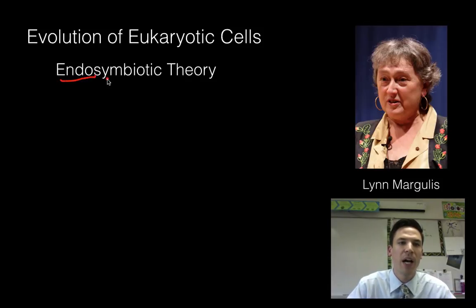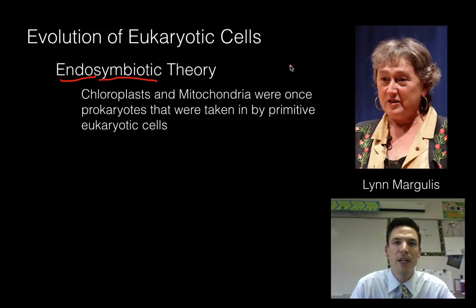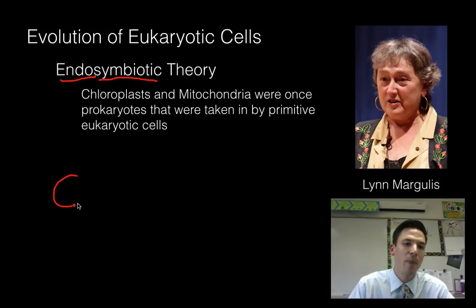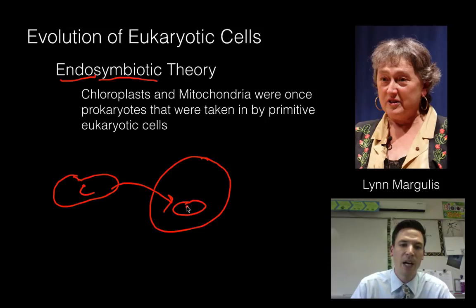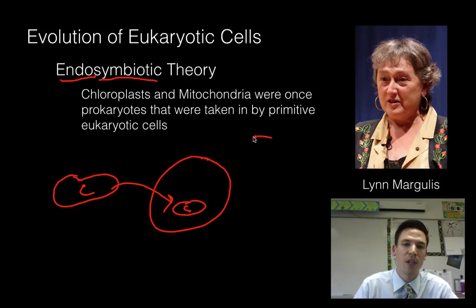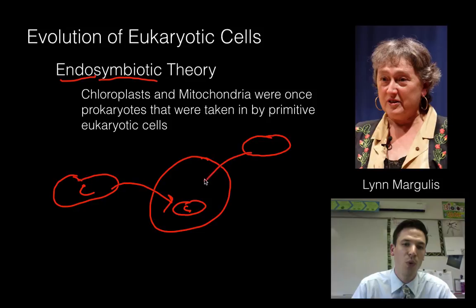Breaking down the word: endo means inside, and symbiotic or symbiosis means a relationship between organisms. This theory states that chloroplasts and even mitochondria — the organelles we find in eukaryotes — were once prokaryotes that were taken in by primitive eukaryotic cells. So going back to that cyanobacteria doing photosynthesis, we think that at some point larger cells used endocytosis to take them in, forming a mutual relationship where the bigger cell gave protection, and the cyanobacteria did photosynthesis creating glucose and releasing oxygen. That relationship later gave rise to chloroplasts. Similarly, other bacteria performing aerobic respiration — what our mitochondria do today — were also taken in and eventually gave rise to our mitochondria.